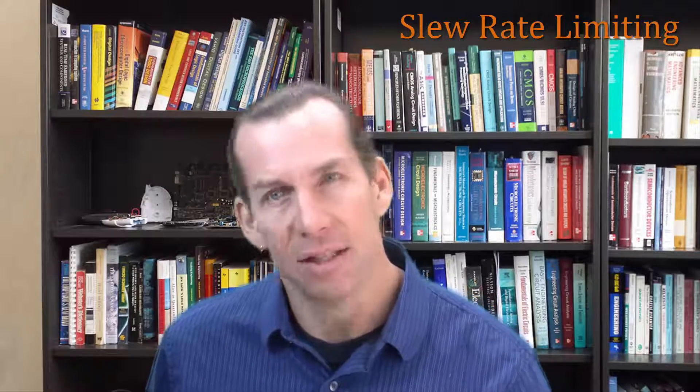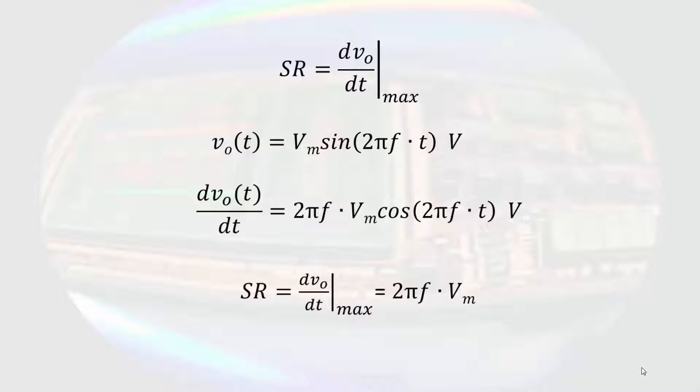The last non-ideality we are going to touch on today is slew rate. The slew rate of an operational amplifier is the maximum possible rate of change of the voltage at the output. Formally, it could be written like this. So, if the output signal were a sine wave, we could take the derivative of the output and determine the combination of frequency and voltage magnitude that the circuit can handle. For example, the 741 operational amplifier has a slew rate of 0.5 volts per microsecond. So if the output has a 3 volt peak, the maximum frequency of the output signal would be about 26.5 kilohertz.